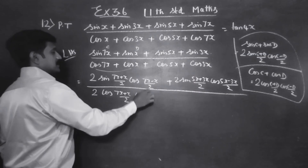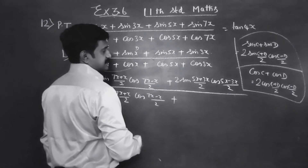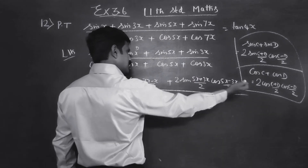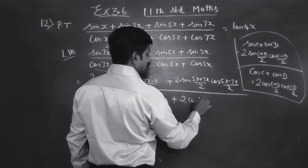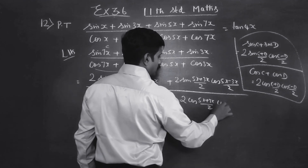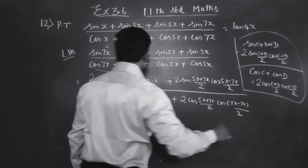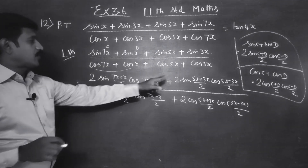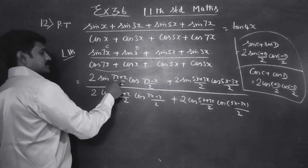Applying the formula: cos (7x minus x) by 2, plus again the same formula — 2 cos (5x plus 3x) by 2, cos (5x minus 3x) by 2. The 2 is a full common factor and can be cancelled. 7x plus x is 8x, and 8x by 2 is 4x.